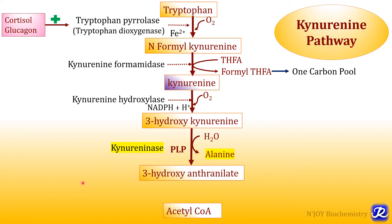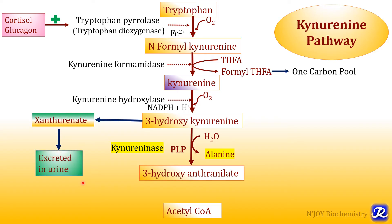Kynurenine is converted to 3-hydroxykynurenine. This 3-hydroxykynurenine is then acted upon by kynureninase, a PLP (pyridoxal phosphate)-dependent enzyme. In this process alanine is synthesized — that is why tryptophan is called a glucogenic amino acid — and 3-hydroxykynurenine is converted to 3-hydroxyanthranylate. If there is deficiency of pyridoxal phosphate, 3-hydroxykynurenine is channeled to synthesis of xanthuranate, which is excreted in the urine. Through a series of reactions, 3-hydroxyanthranylate is converted to acetyl-CoA, which is why tryptophan is also called a ketogenic amino acid.